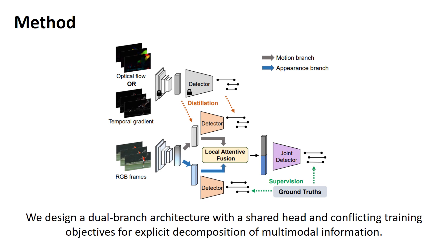An important implementation design is that the two branches share the weights of action detection heads. Given the same detection head and conflicting objectives, they are incentivized to extract modality-specific information from the entangled representations. In the end, the multimodal features are combined by the proposed local attentive fusion and used for final prediction.